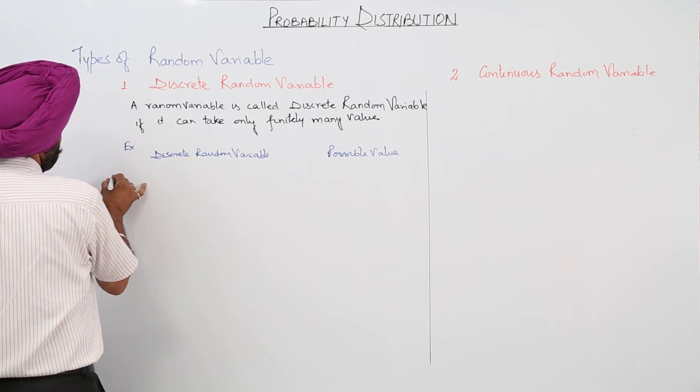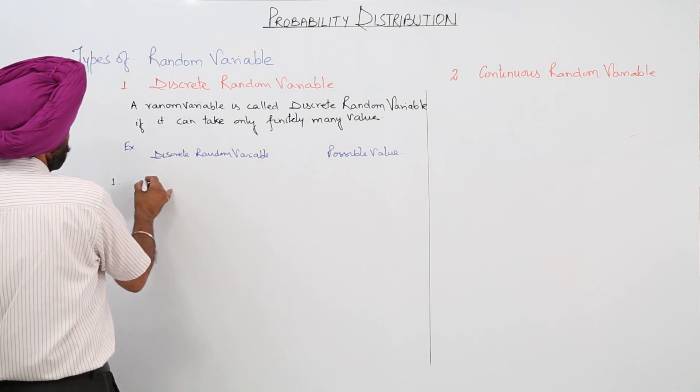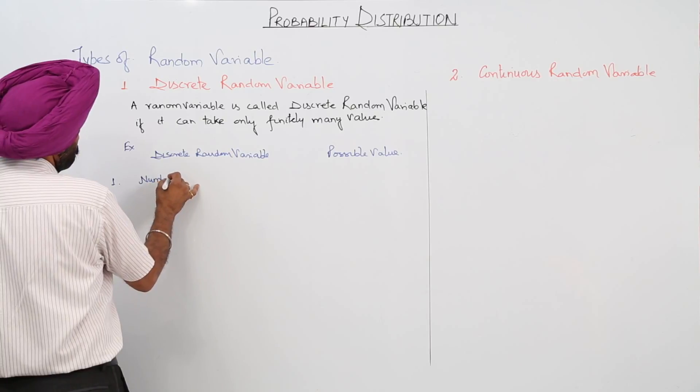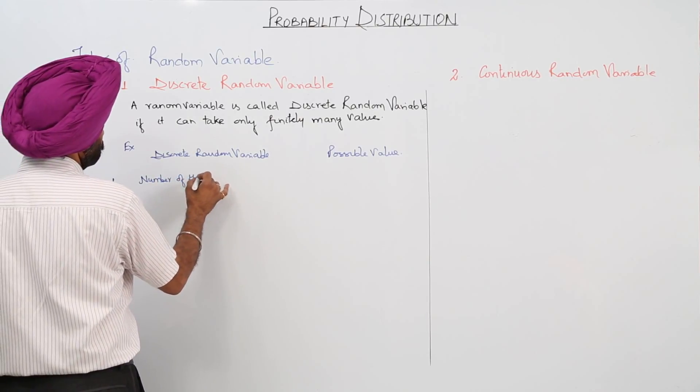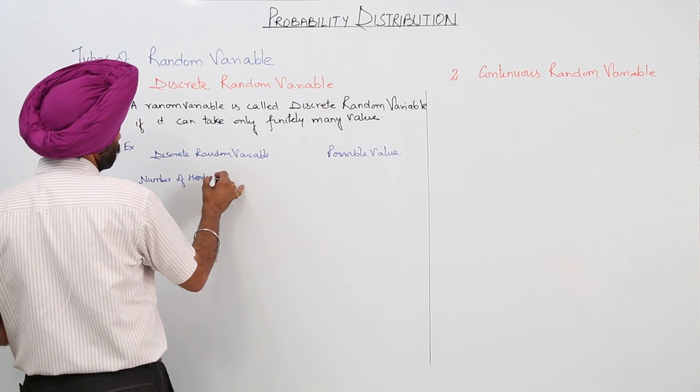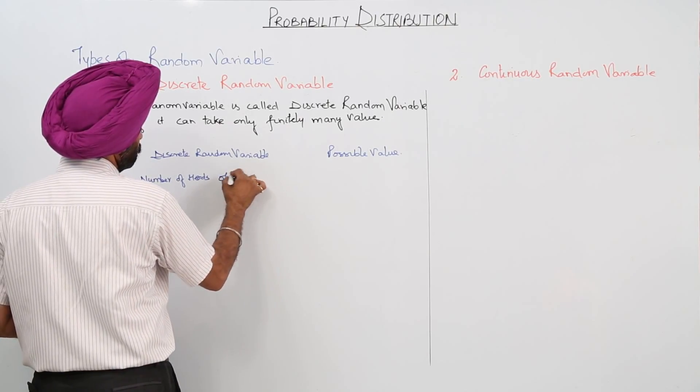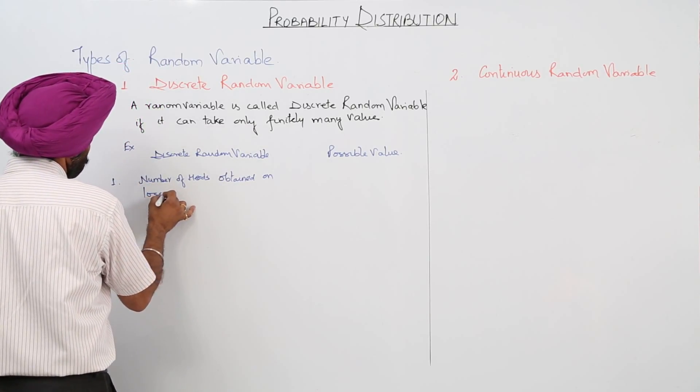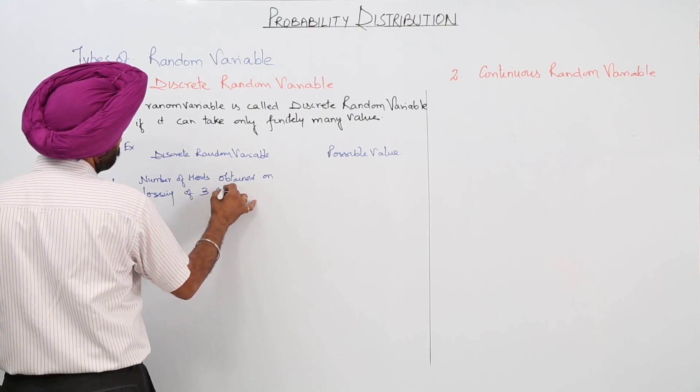So number one, it can be discrete random variable. It can be number of heads obtained on tossing of three coins.